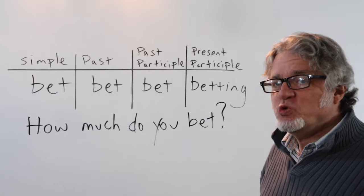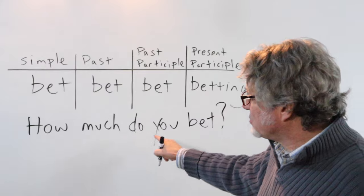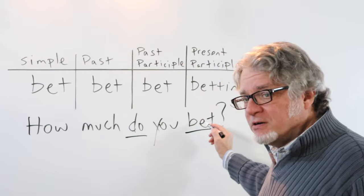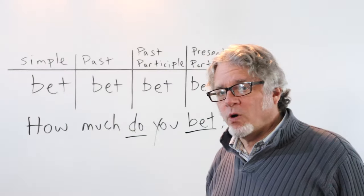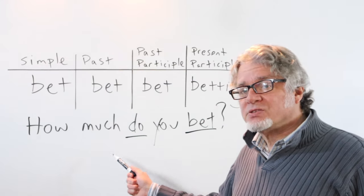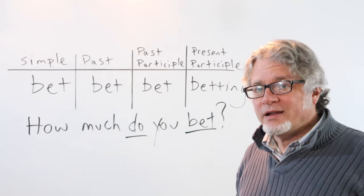How much do you bet? In this question, here's the helping verb for the present tense, and the main verb is in the simple form. This kind of question can be asked when talking about an amount of money.